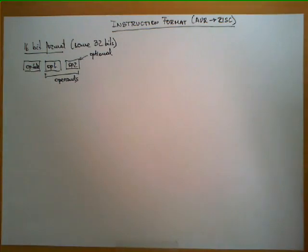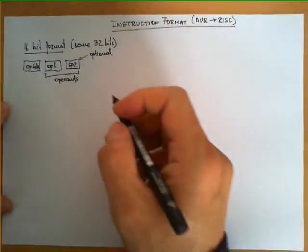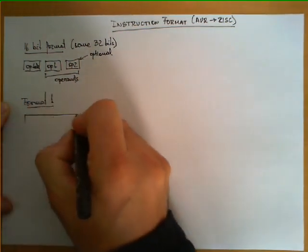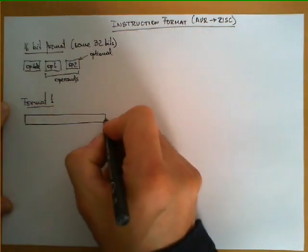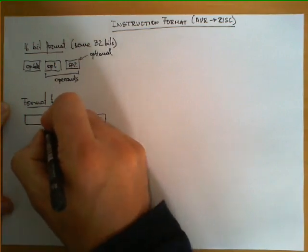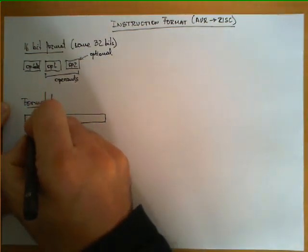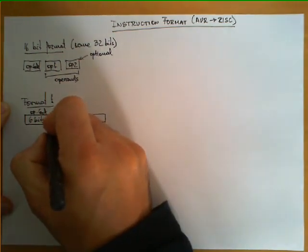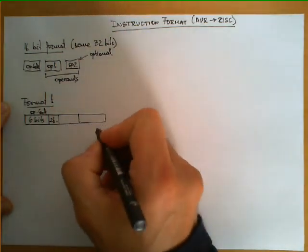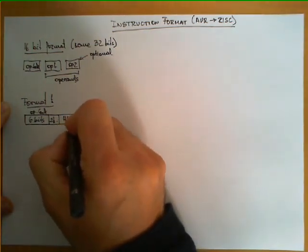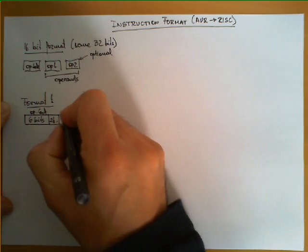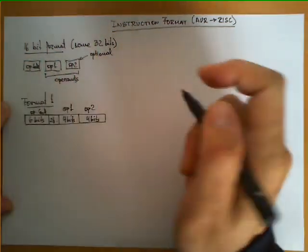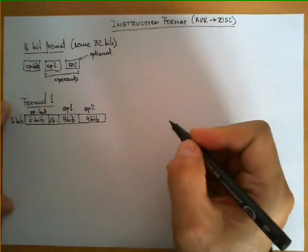Let's give examples of the formats supported by the microprocessor. The first one: 16 bits divided into four fields. The first field has six bits to encode the operation code. The second is only two bits. And then two additional fields, four bits each, to encode operand one and operand two. This is one possible way of encoding the format, with 16 bits.